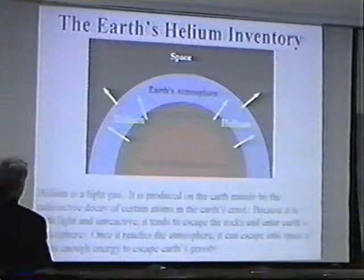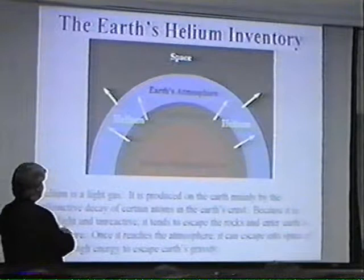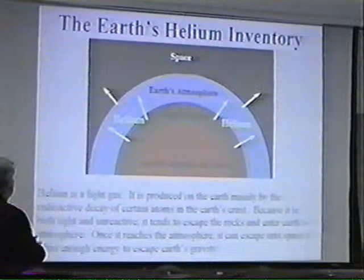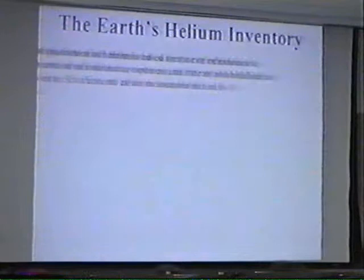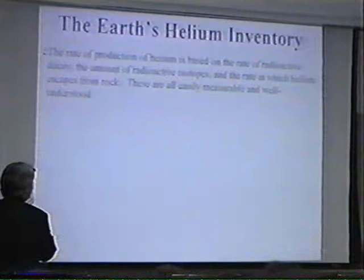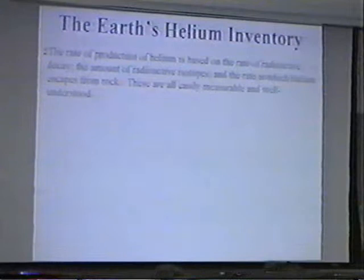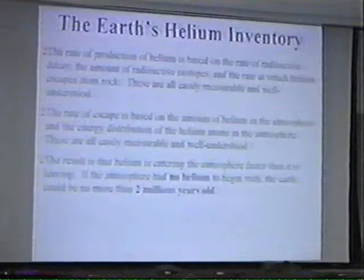Once helium is made by radioactive decay, there's really not much that can happen to it. It can either be trapped in the rocks where it's made, or it can escape the rocks and enter Earth's atmosphere. If it enters the atmosphere, it floats up to the top, and if it has enough kinetic energy when it reaches the edges of the atmosphere, it can escape. We know the rate of helium production — based on the rate of radioactive decay, the amount of radioactive isotopes, and the rate at which helium gets out of the rocks — and these are well measured and well understood. The rate of escape is based on the energy distribution of helium in the atmosphere, and that's very well understood too.